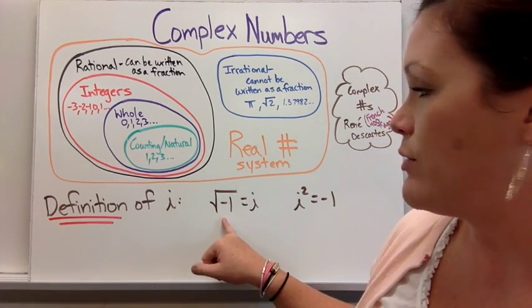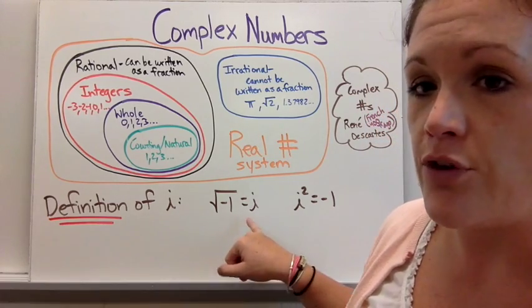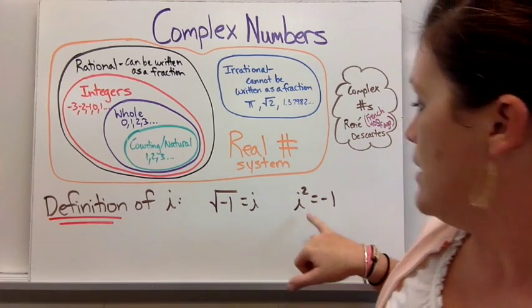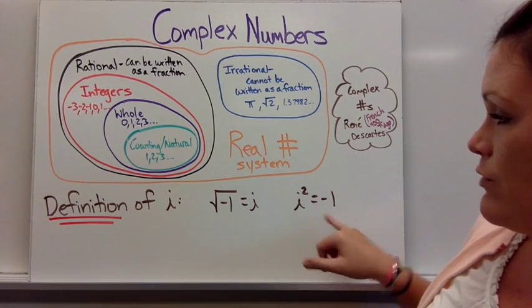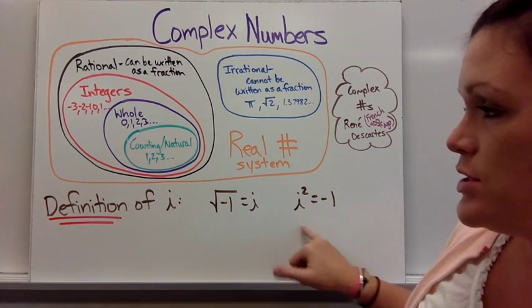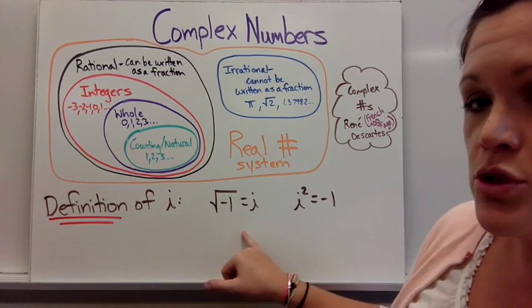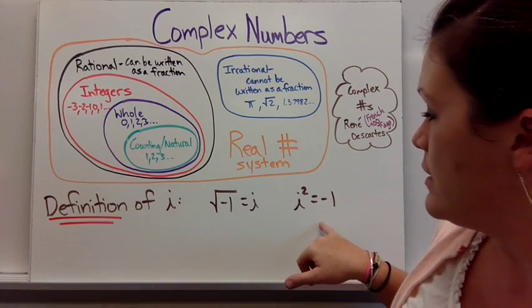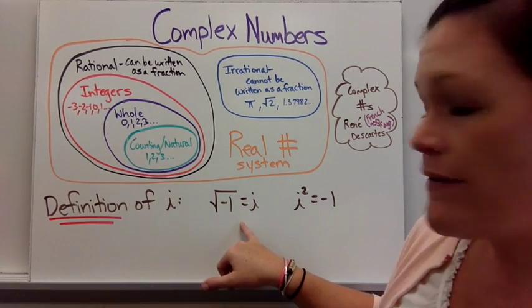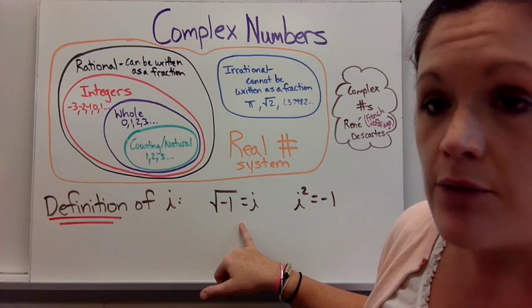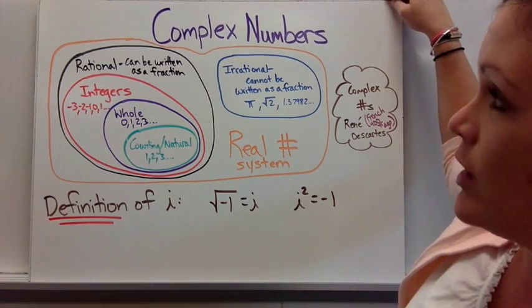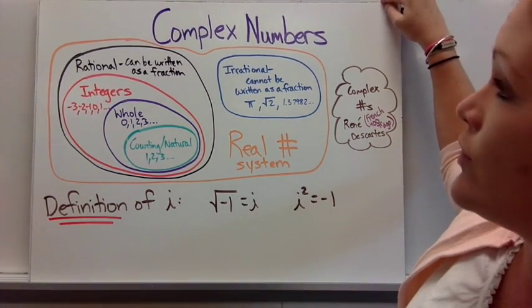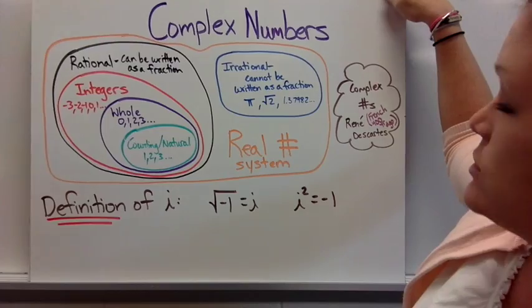Using i we're able to take it further. i squared is equal to negative 1. These are the two most important definitions of i that we're going to use, and on the next slide I'm going to show you where this all falls together.